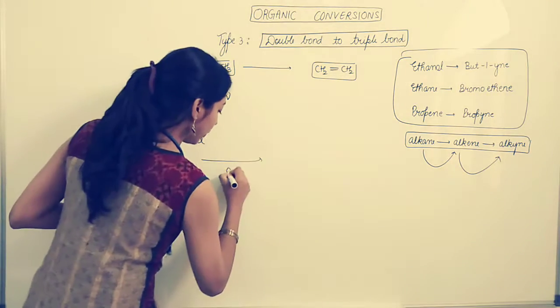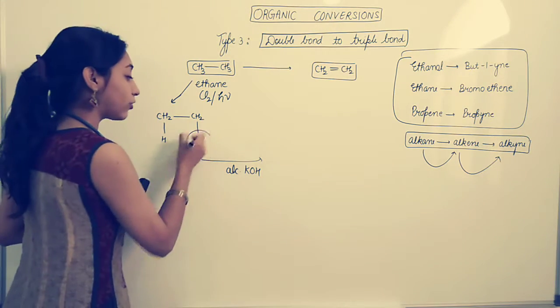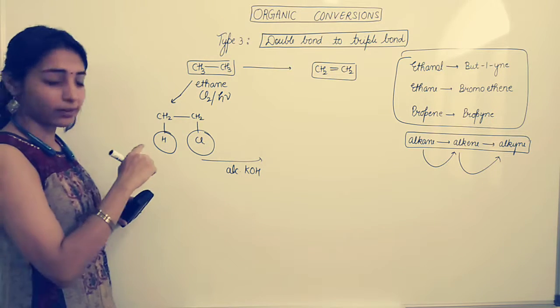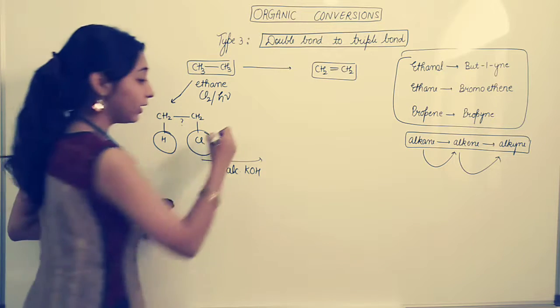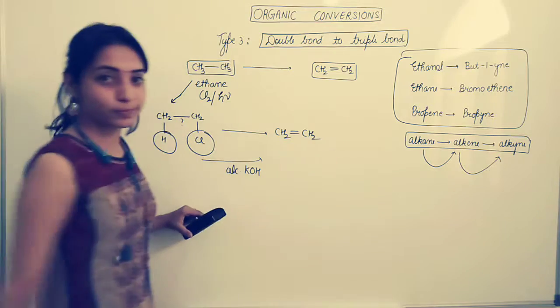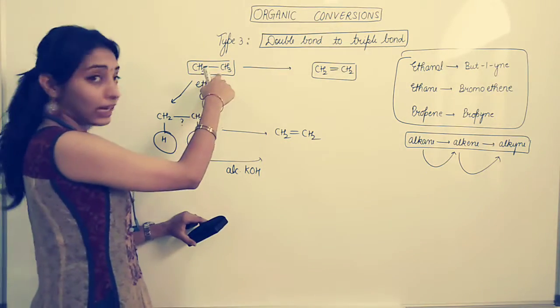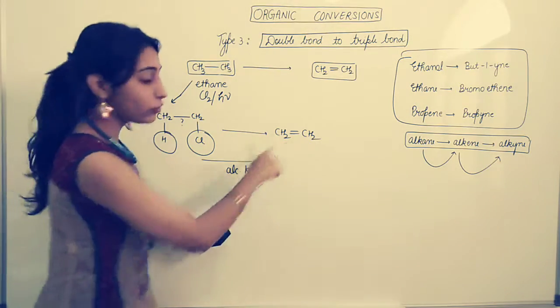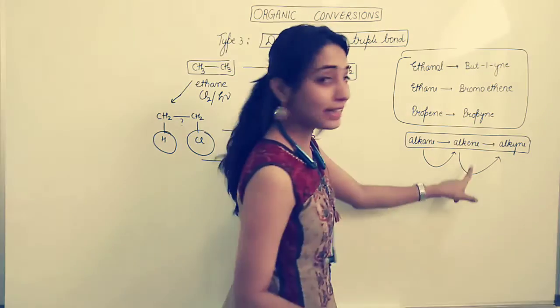Once again if you want me to tell it properly, let me write it in expanded form. Now I am putting alcoholic KOH. So alcoholic KOH will take out this chlorine and will take out hydrogen from the adjacent carbon. And at this position, we will get a double bond leading to the formation of CH2 double bond CH2. So if you have alkane, you convert it to alkyl halide then put it in alcoholic KOH, you get alkene. Clear?